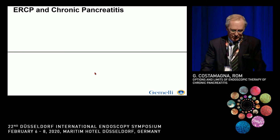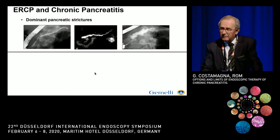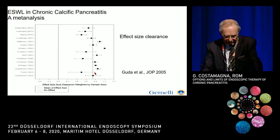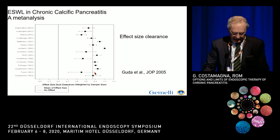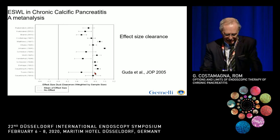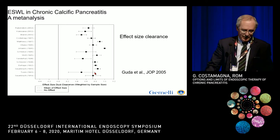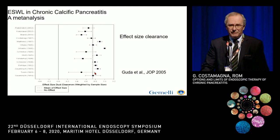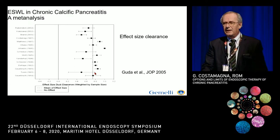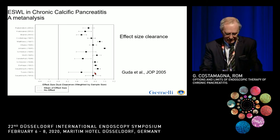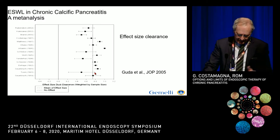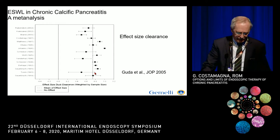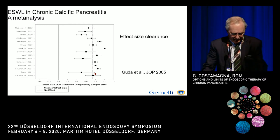The two main features dominating the morphology of chronic pancreatitis are the dominant strictures on the main pancreatic duct and stones. Endoscopically, ESWL is absolutely critical — at least 50% to 60% of the patients need ESWL in the course of endoscopic treatment for chronic pancreatitis. This meta-analysis from about 15 years ago shows that the effect on clearance of the duct is extremely positive in all the papers published at that time.